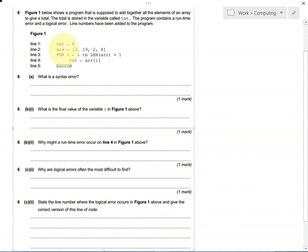Then arr, which presumably stands for array, and we've got one, two, three, four numbers - four integers in that array, and we've got a for loop.